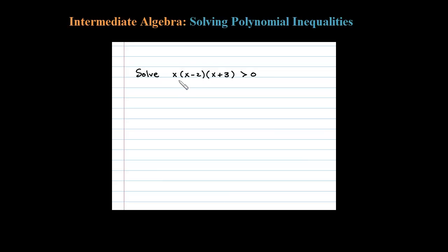Here I'm asked to solve this inequality. The nice thing about this one is that it's already in factored form. So let's go ahead and figure out the critical values. Now the critical values are going to be the zeros.